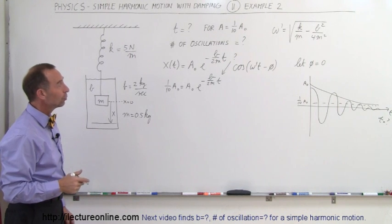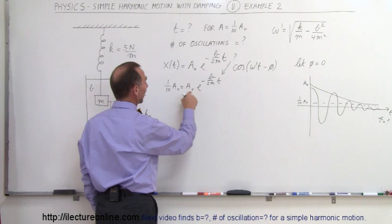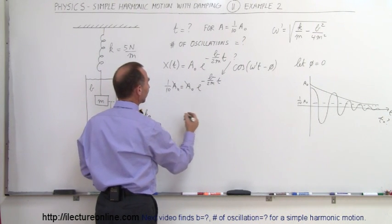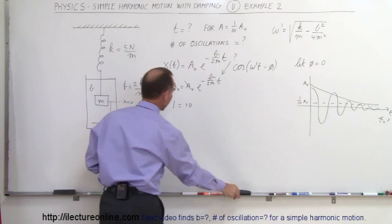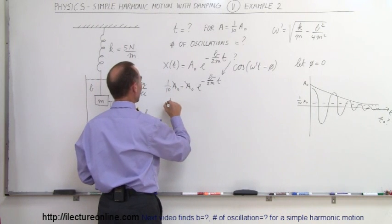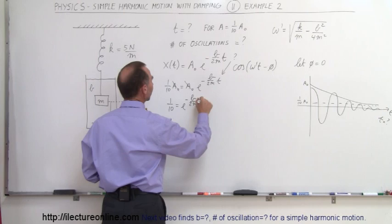So what is t equal to? Well, in order to do that, we have to first simplify this. You can see a sub-naught is on both sides, so that cancels out. And now multiply both sides by 10, we get 1 is equal to 10. No, I don't want to do that. I think I want to leave the 1 tenth on that side. Okay, so let me rewrite the equation. So we have 1 tenth is equal to e to the minus b over 2m times t.